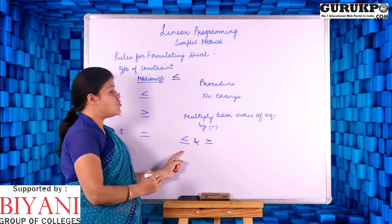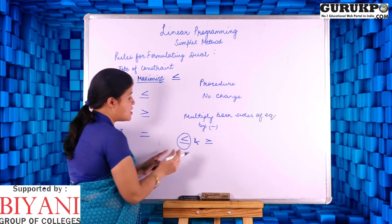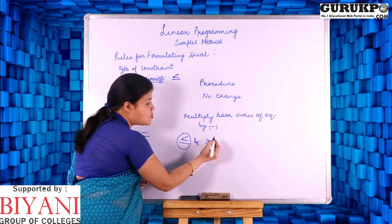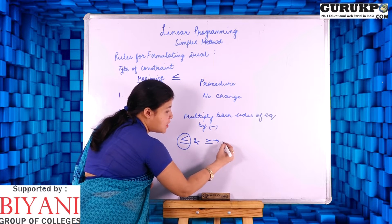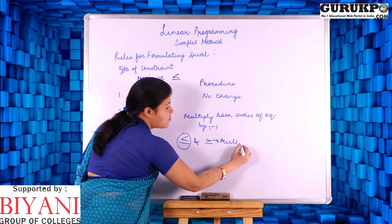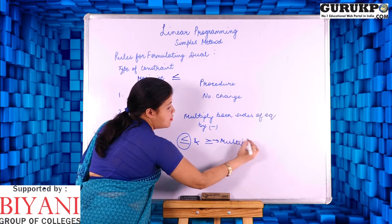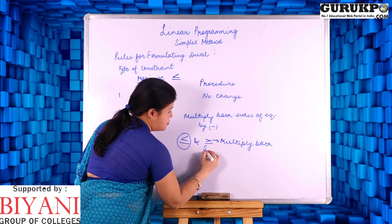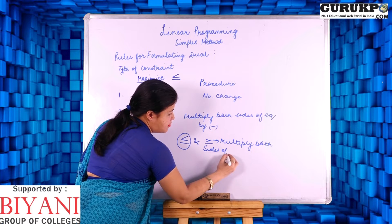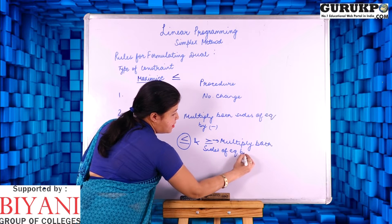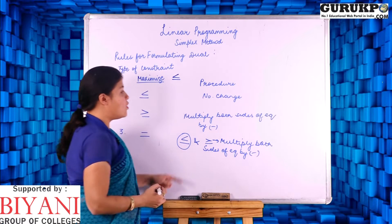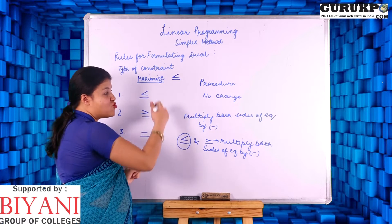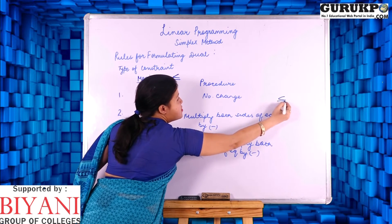There is no need to change this particular sign as it is already in maximized version. For the at-least sign, we again multiply both sides of the equation by a negative sign. Now all three constraints have changed to the at-most sign.